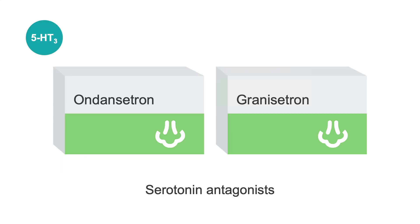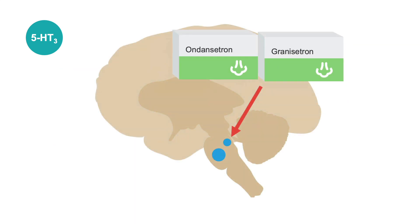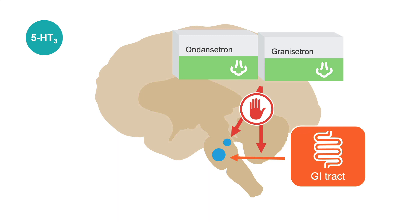Next, we have the serotonin antagonists. Commonly used medications in this class are ondansetron and granisetron. They block serotonergic input into the vomiting center from both the chemoreceptor trigger zone and the afferent pathways from GI and cardiac input.